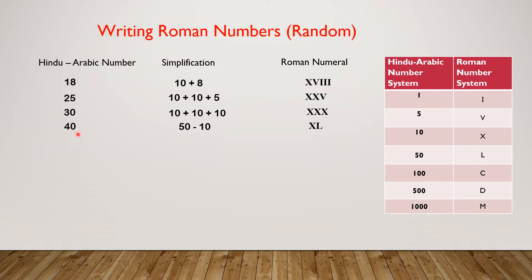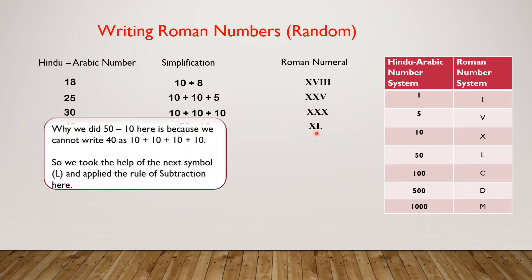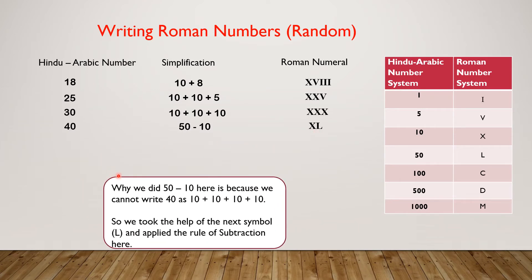40: simplification 50 minus 10, Roman numeral XL. Why we did 50 minus 10 here? Because we cannot write 40 as 10 plus 10 plus 10 plus 10. So we took the help of the next symbol L and applied the rule of subtraction here.